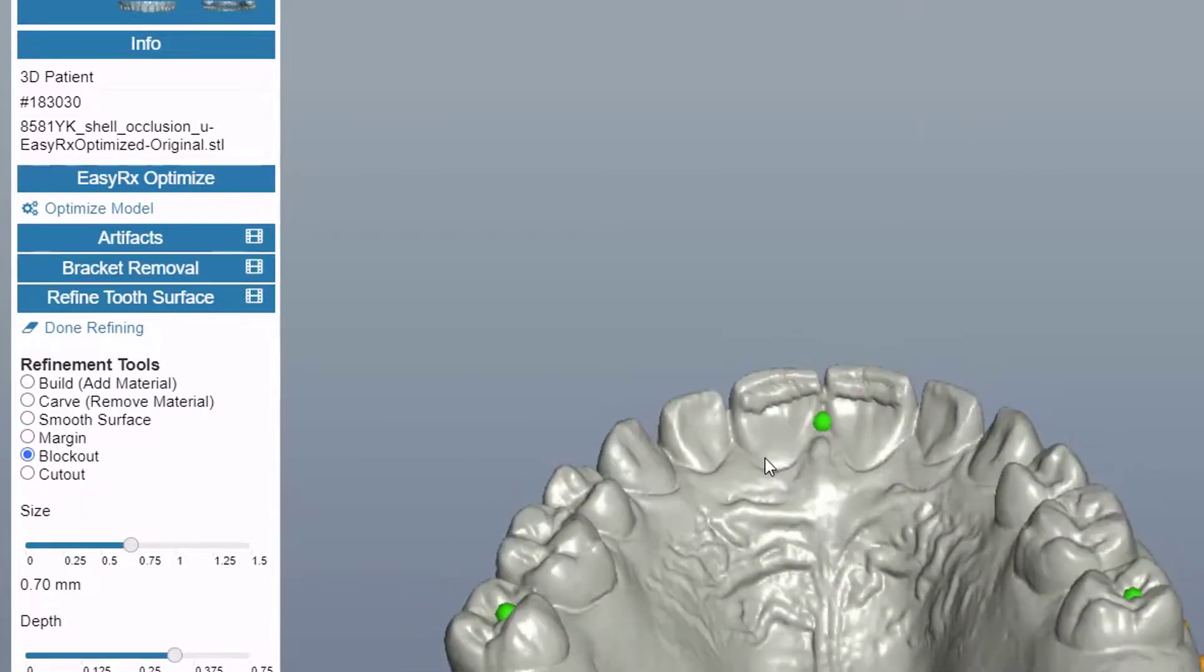Block out allows you to block out areas, say for a lingual retainer, or to block out undercuts.